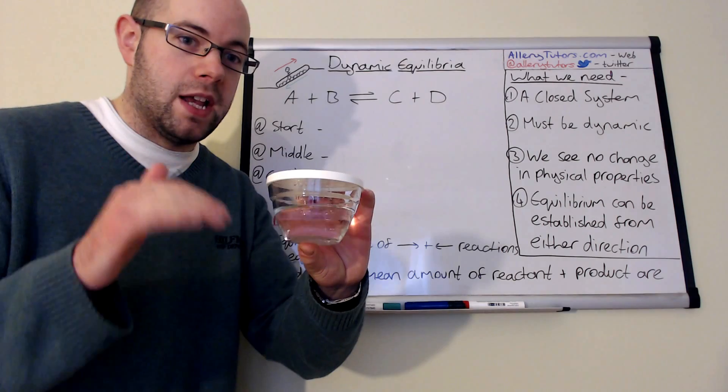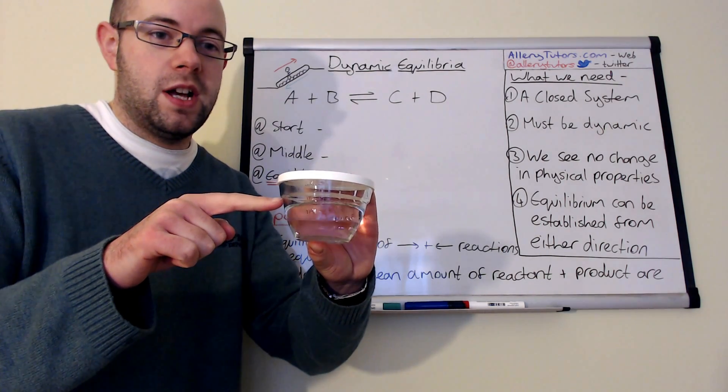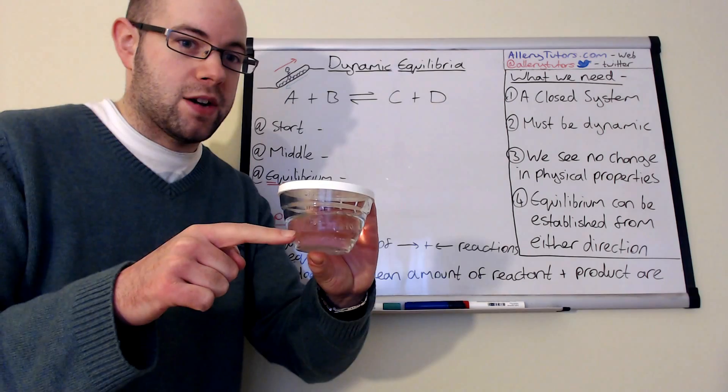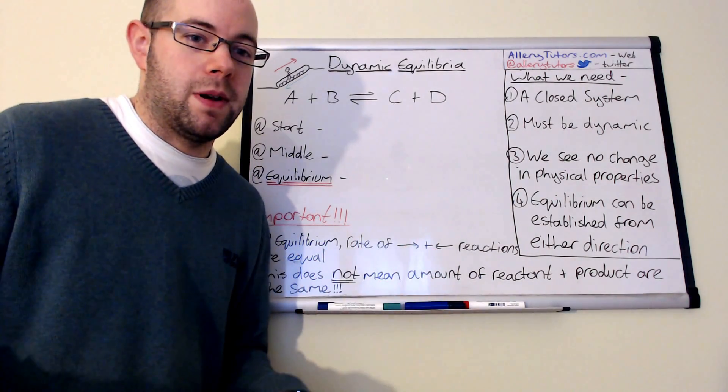But the key point here is that equilibrium is where the rate of the forward reaction equals the rate of the backward reaction. And it appears as though nothing's happening because the reaction is actually in equilibrium.